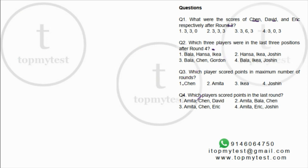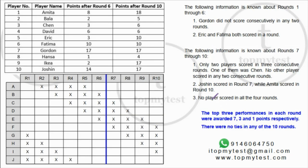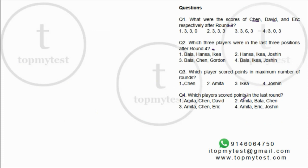Scores after rounds six and ten are provided. Looking at Eric's data: Eric has only one game between rounds seven and ten, and increased his points by 7, meaning Eric scored 7 in round ten. One of the questions asks which players scored in round ten, so Eric is definitely one of them.